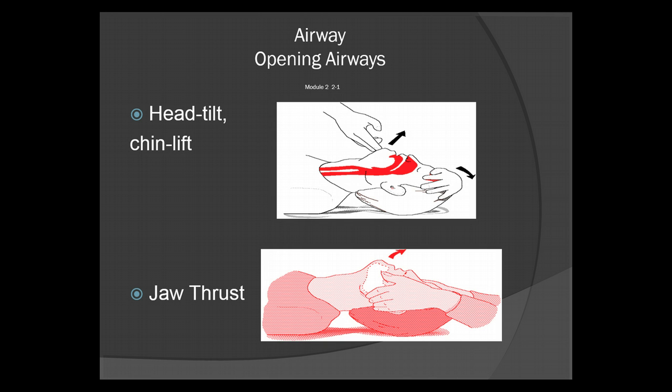However, in cases of trauma or suspected trauma, you will use the jaw thrust, using two fingers of each hand behind the mandible to pull upward on the jaw while maintaining C-spine mobilization.